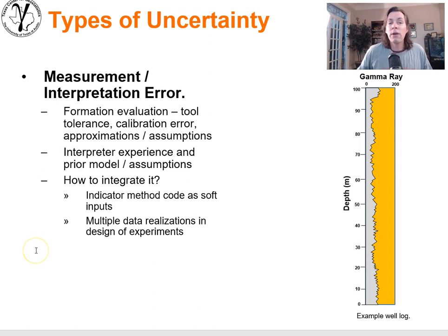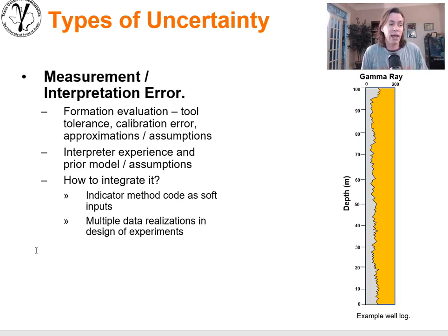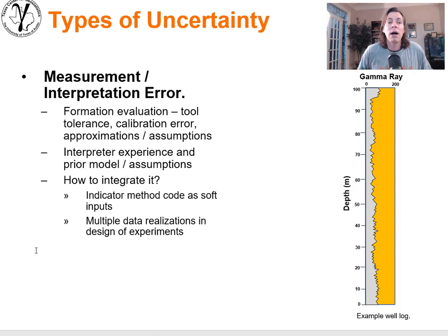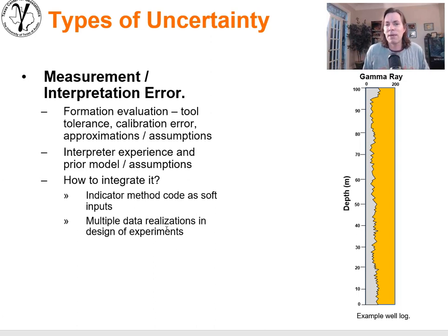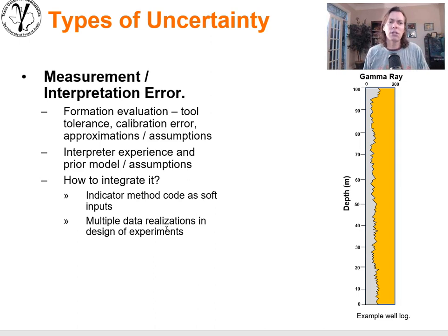How do we integrate measurement and interpretation uncertainty? Indicator-based methods allow you to take data and code it with probability based on thresholds or categories. Using soft probabilities — not just zero and 100% — you can encode the uncertainty in the data. Another approach is multiple data realizations: simulate a realization of the data given local uncertainty distributions, perhaps using p-field-based simulation, and then use that data realization to build a realization away from the data. Most of the time, our data is not truly hard data — it has some degree of softness when interrogated closely.